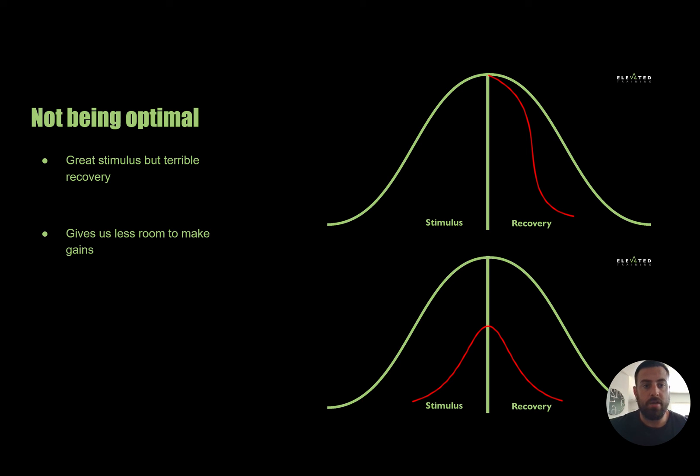So if the recovery is not being optimal but the programming is, you get great stimulus and your lack of recovery then shifts the middle of that bell curve, or the area that we're probably hitting, off to the left as opposed to the right. That midline would get shifted to the left with the shorter or worse recovery available.